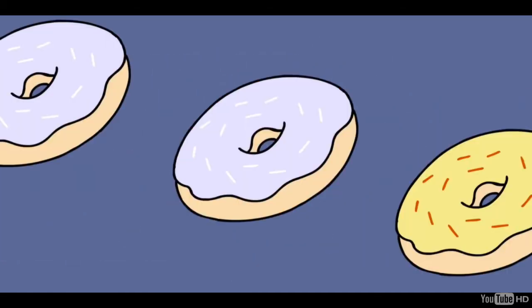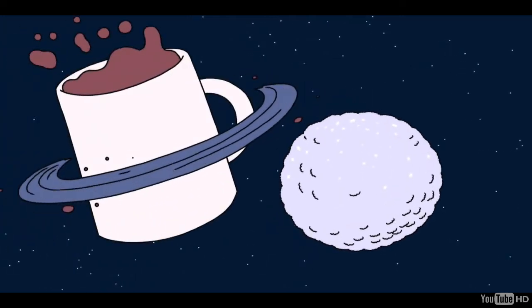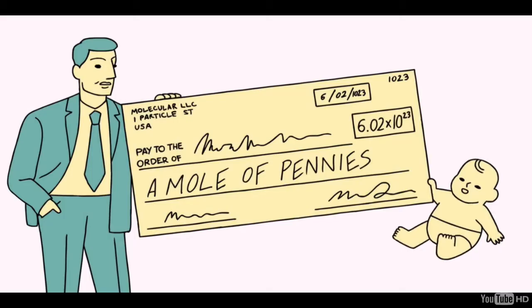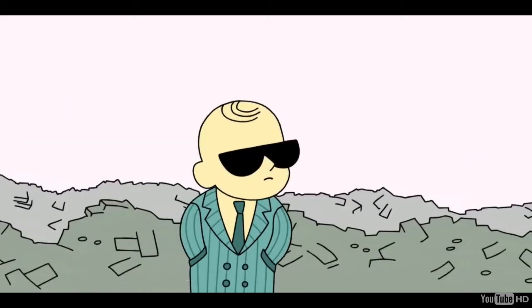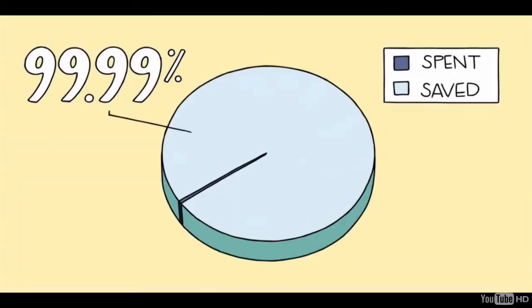To help picture it: exchange the water particles for donuts. If you had a mole of donuts, they would cover the entire earth to a depth of 8 kilometers, which is about 5 miles. If you had a mole of basketballs, you could create a new planet the size of the earth. If you received a mole of pennies on the day you were born and spent a million dollars a second until the day you died at age 100, you would still have more than 99.99% of your money in the bank.